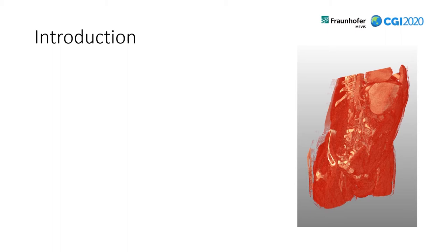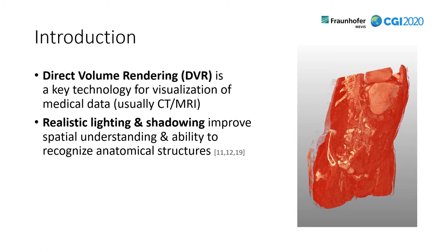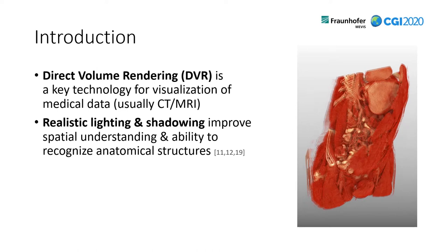Let's start with a short introduction. In the image on the right you can see a typical volume rendering. Volume rendering is typically used in addition to classical 2D slicing methodologies to view radiological image data in 3D. So volume rendering is a key technology for the visualization of medical data, which is usually CT or MRI data. As you can see, the image on the right isn't rendered with any lighting or shadowing — it's just an ambient light source. However, it has been proven that realistic lighting and shadowing improve spatial understanding and also improve the ability to recognize anatomical structures significantly.